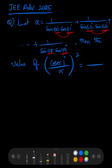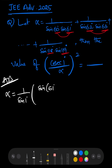So I just multiply the numerator as well as the denominator with sin 1°, so that α equals (1/sin 1°) times the series. The numerator sin 1° in the first term can be written as sin(61° − 60°), giving sin(61° − 60°) / (sin 60° · sin 61°).